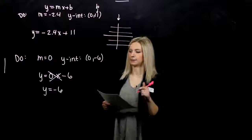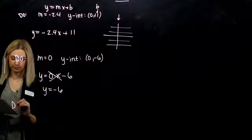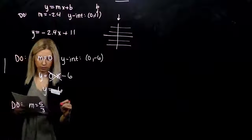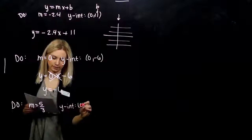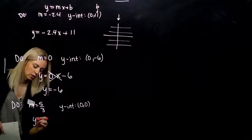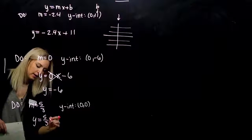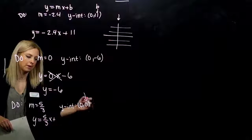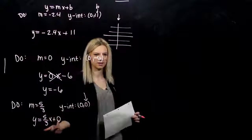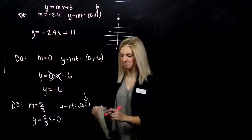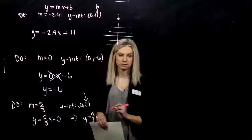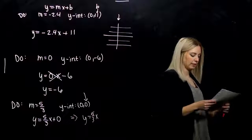Last one. Slope of 5/3 and it goes through the origin. That's our y-intercept. What is the equation of that line? Y equals mx plus, what's my b value in that case? Zero. But do I really need to write that? Is that very simplified and proper? No. So we can rewrite it: y equals 5/3x.